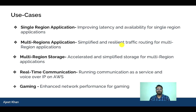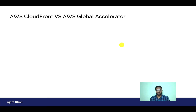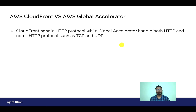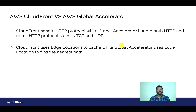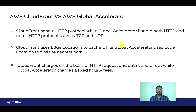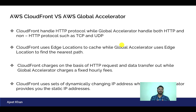You might be wondering: CloudFront also uses edge locations and helps reduce latency — so what's the difference between CloudFront and Global Accelerator? CloudFront handles only the HTTP protocol, whereas Global Accelerator handles both HTTP and non-HTTP protocols such as TCP and UDP. CloudFront uses edge locations to cache content, while Global Accelerator uses edge locations to find the nearest AWS path — it does not cache anything. CloudFront charges based on HTTP requests and data transfer, while Global Accelerator charges a fixed hourly fee plus data transfer. Finally, CloudFront uses a set of dynamically changing IP addresses, while Global Accelerator provides two static anycast IPs.